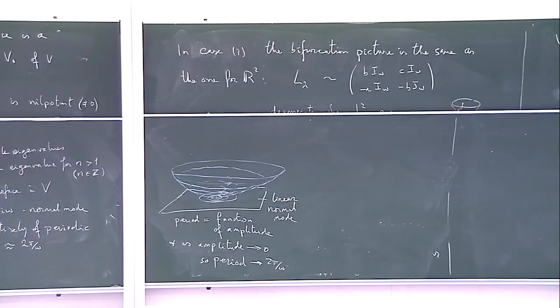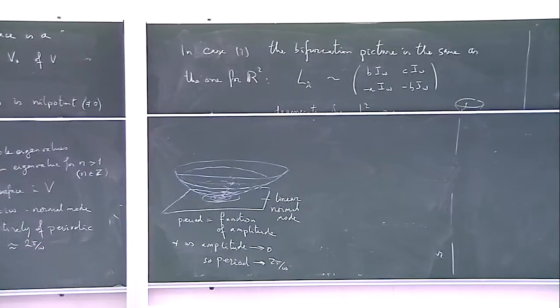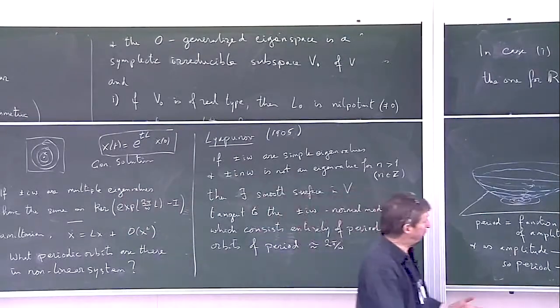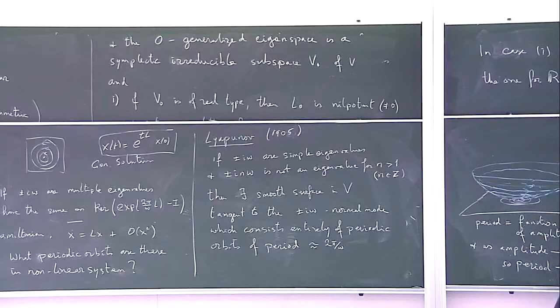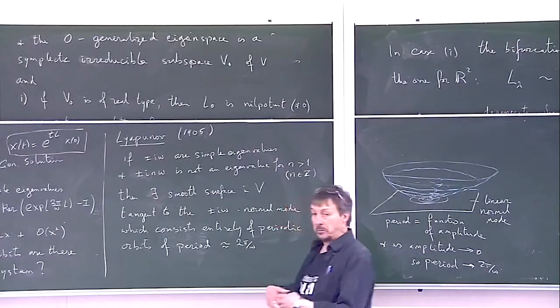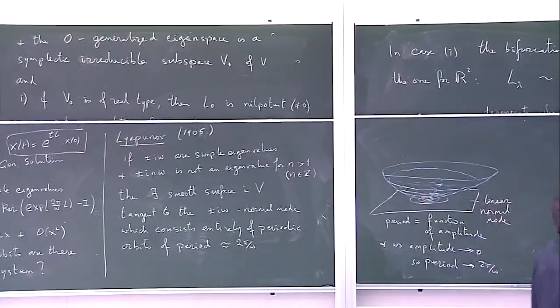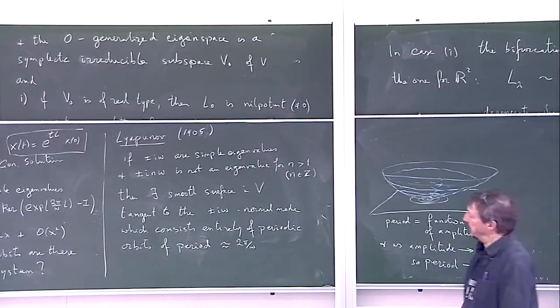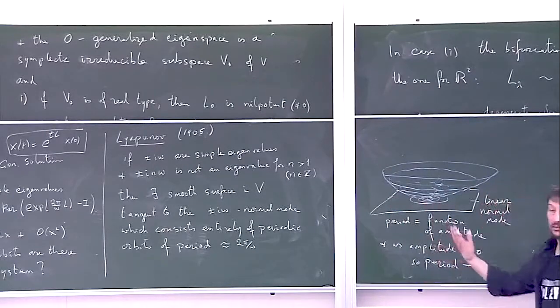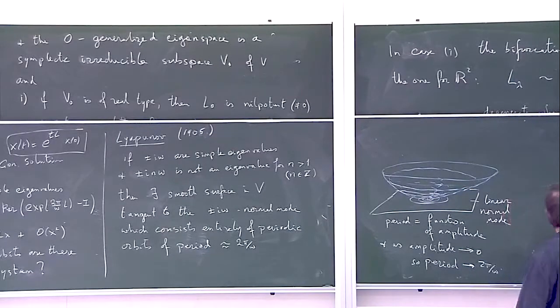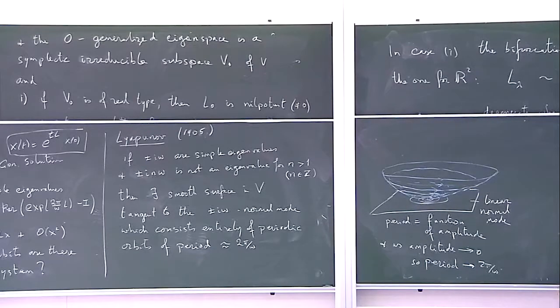Period is a function of amplitude, and this amplitude tends to 0, so period tends to 2 pi over omega. That's Lyapunov's theorem. It requires firstly simple eigenvalues and secondly this non-resonance condition. Lyapunov himself proved it just for analytic Hamiltonians, but there have been lots of proofs using different techniques and conditions on smoothness. Certainly doesn't need to be analytic.